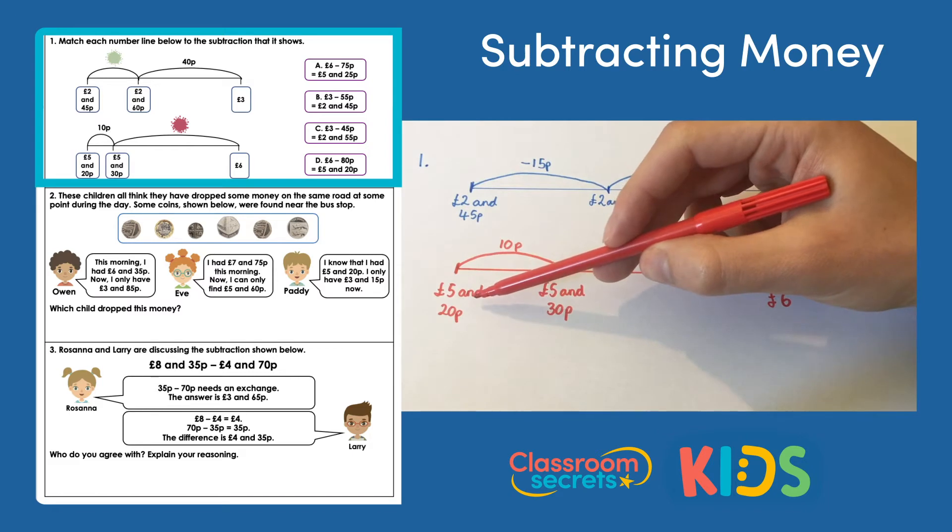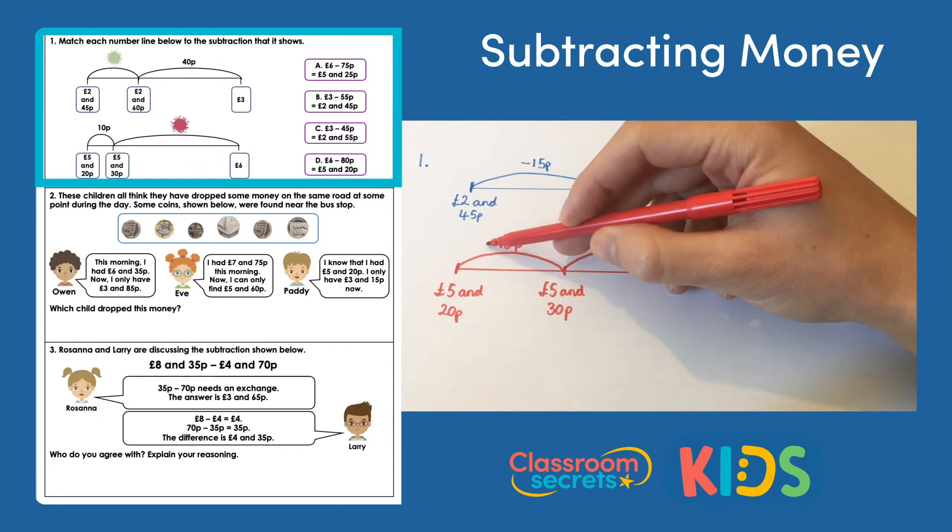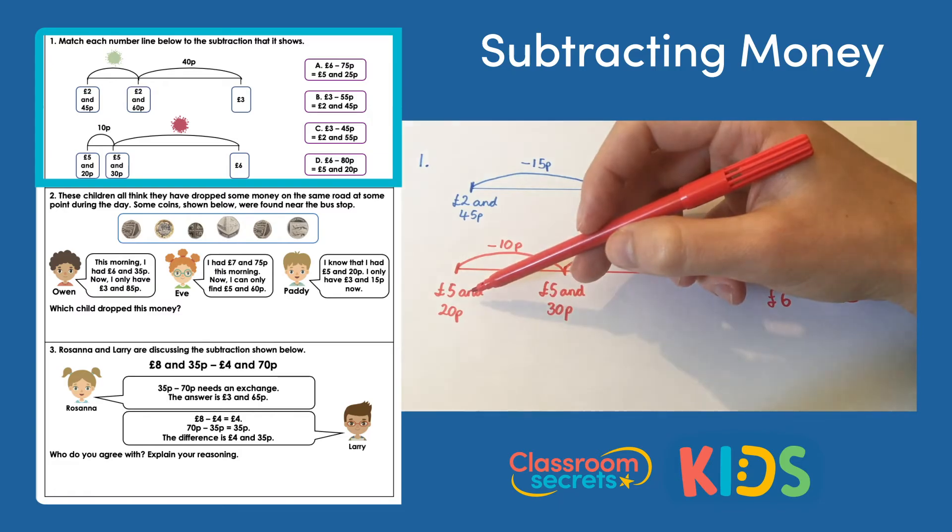Then you need to add up your jumps. 70 pence add the 10 pence gets 80 pence. So it's six pounds take 80 pence and that is D. Six pounds take away 80 pence is five pounds and 20 pence.